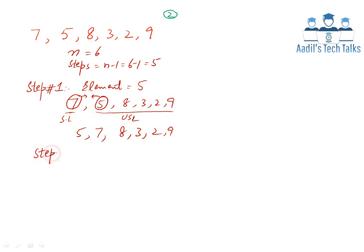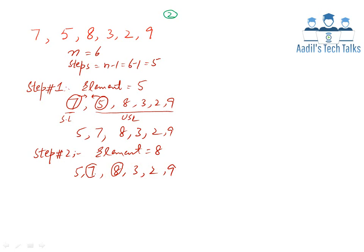Step number 2: element is equal to 8. The sorted list is now 5, 7 and the unsorted list is 8, 3, 2, and 9. Eight is selected and compared with the front element of the sorted list. As 8 is greater than 7, meaning 8 is larger than the largest element of the sorted list, 8 is inserted at the front of the sorted list. Result: 5, 7, 8, 3, 2, 9.